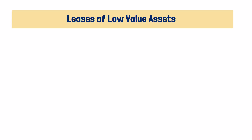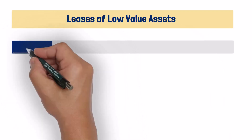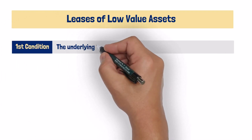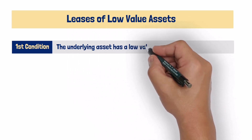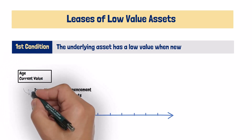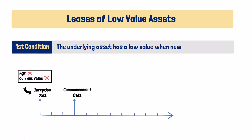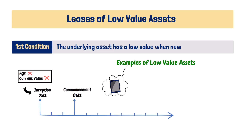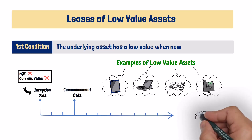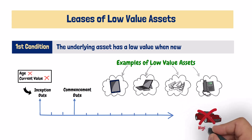A lease is considered a lease of a low value asset if the following conditions are met. The first condition: the underlying asset should have a low value when new. The age of the asset or its current value at the inception of the lease agreement is ignored. Examples of these assets are PC tablets, personal computers, small items of office furniture, and telephone sets. On the other hand, cars are not considered low-value assets because a car would have a high value when new.